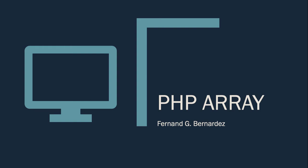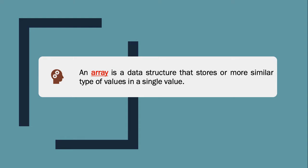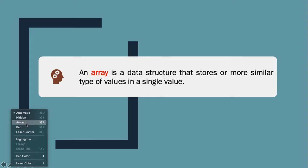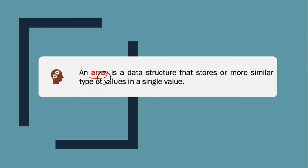First things first, the definition. So what is the definition of an array? Array is a data structure that stores one or more similar type of values in a single value. So for example, if you want to store 100 numbers, instead of defining 100 variables, it's easy to define an array that contains a length of one hundred.